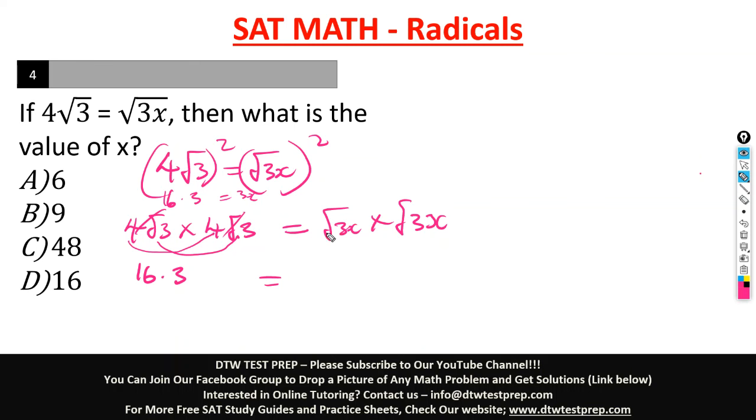So here, the same thing, when you have two square roots multiplying back to back, you would cancel the roots, the square roots, and you have 3x. So 16 times this will give you 48 and we have 3x.